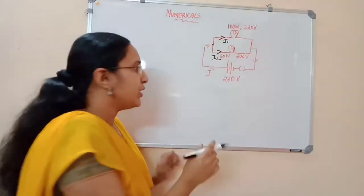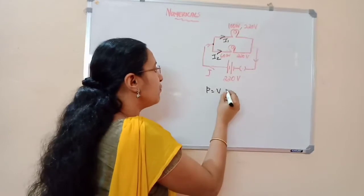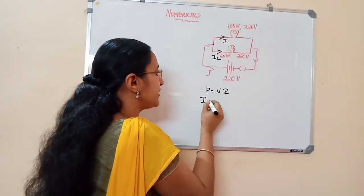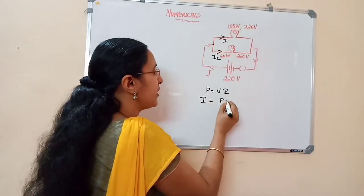Here, 100 watt and 220 volt is given, so we know that power P is equal to VI. Therefore, I is equal to P divided by V.